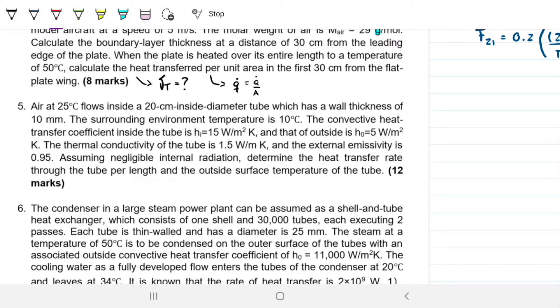The thermal conductivity of the tube is 1.5, and the external emissivity is 0.95. Assuming negligible internal radiation, determine the heat transfer rate through the tube per length and the outside surface temperature of the tube.